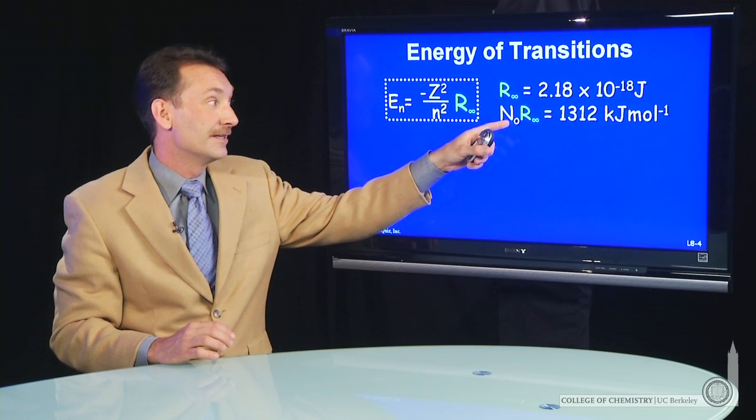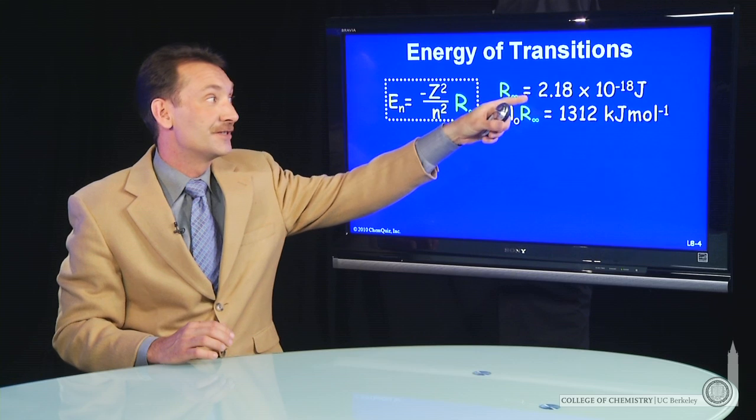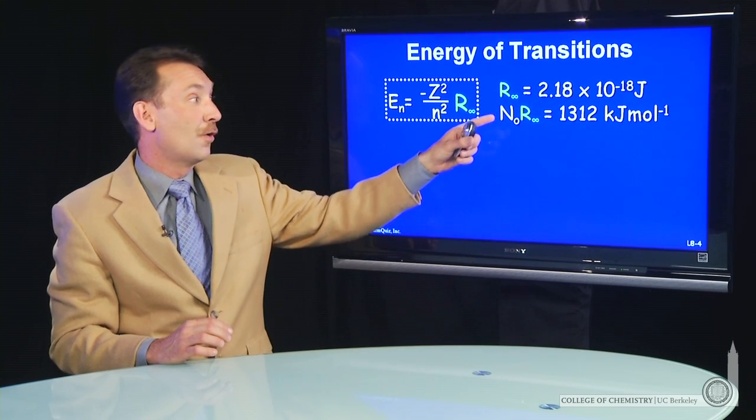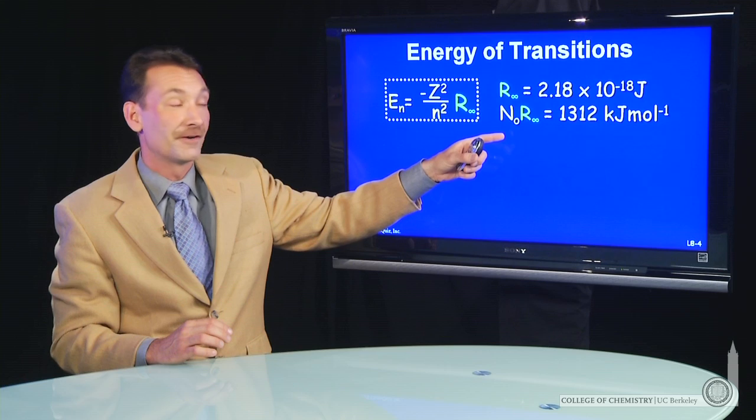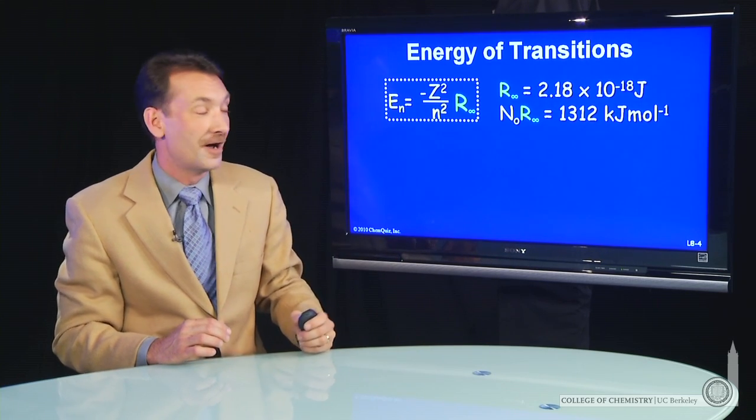We know R∞ and a mole of R∞. So R∞ is 2.18 times 10 to the minus 18 joules, or times Avogadro's number, 1312 kilojoules per mole.